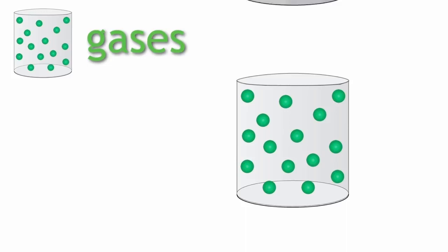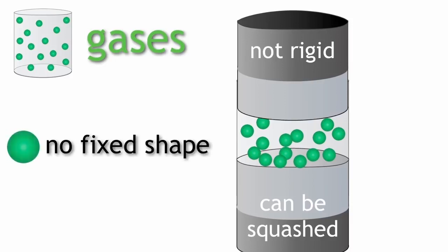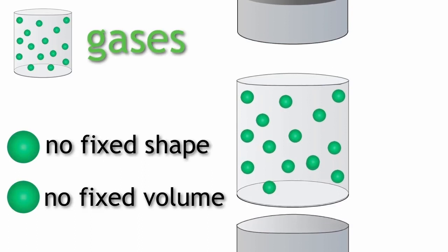As a result, gases are not rigid and can be squashed or compressed. They do not have a fixed shape nor fixed volume. They fill the whole space they are in.